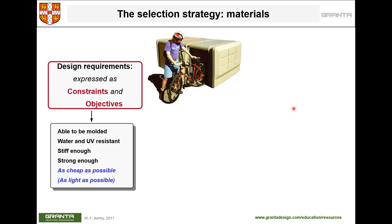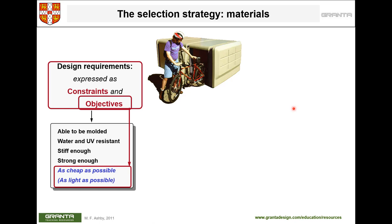For this bicycle shed, your constraints include: must be moldable (for cost-effective manufacturing), water and UV resistant (for outdoor use), sufficiently stiff, and strong enough not to fail. Your objectives are to minimize cost and minimize weight — you don't have specific numbers for these, you just want to minimize them. Moldability and UV resistance are constraints: if a material fails them, it doesn't proceed to the next stage.